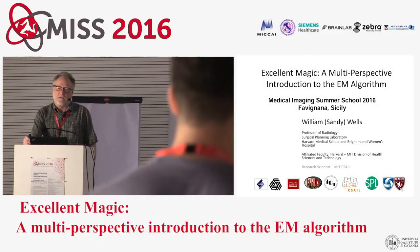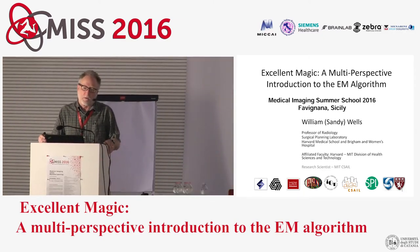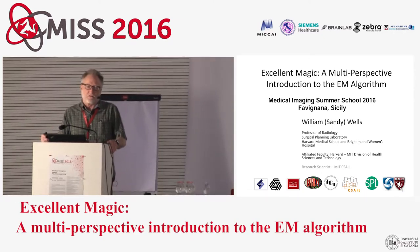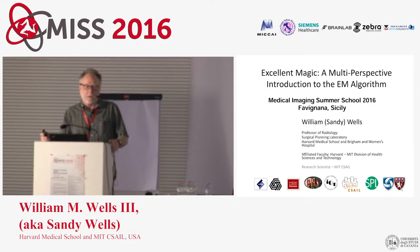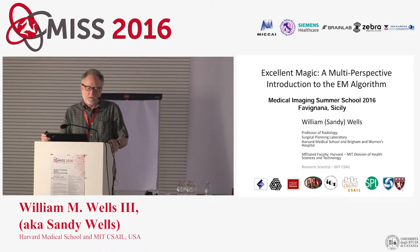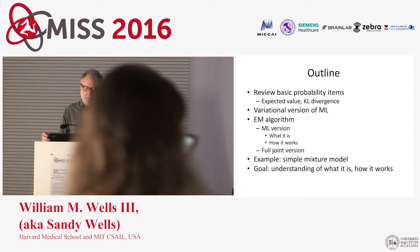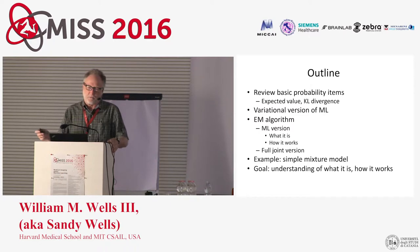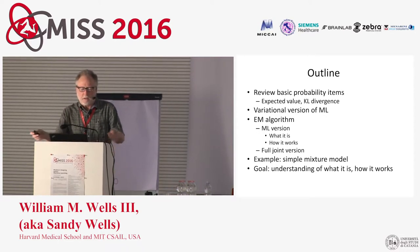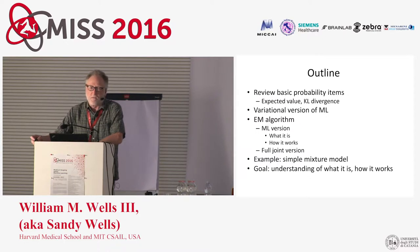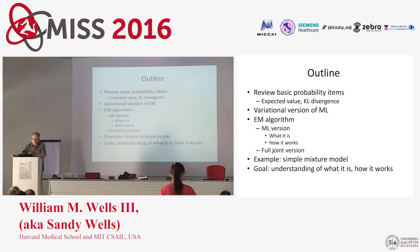The descriptions of the EM algorithm can be a little bit confusing at times, so what I've tried to do is come up with, from my point of view at least, the most easy-to-understand development of the EM algorithm. I'm going to walk slowly through a relatively simple but detailed treatment. I'll start by reviewing basic probability, then talk about how you can view maximum likelihood in a variational way, then the EM algorithm itself, starting with the ML version, then a more general version, and then a simple mixture model example.